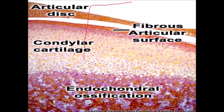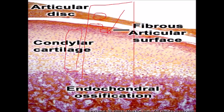This image is of the developing mandible. The layers visible are: the articular disc, then the articular zone, then the reserve zone, then the fibrocartilaginous zone. The fibrocartilaginous zone in the developing mandible is divided into two layers: the proliferative cartilage and the hypertrophic cartilage. And then we have the calcified cartilage and bone.